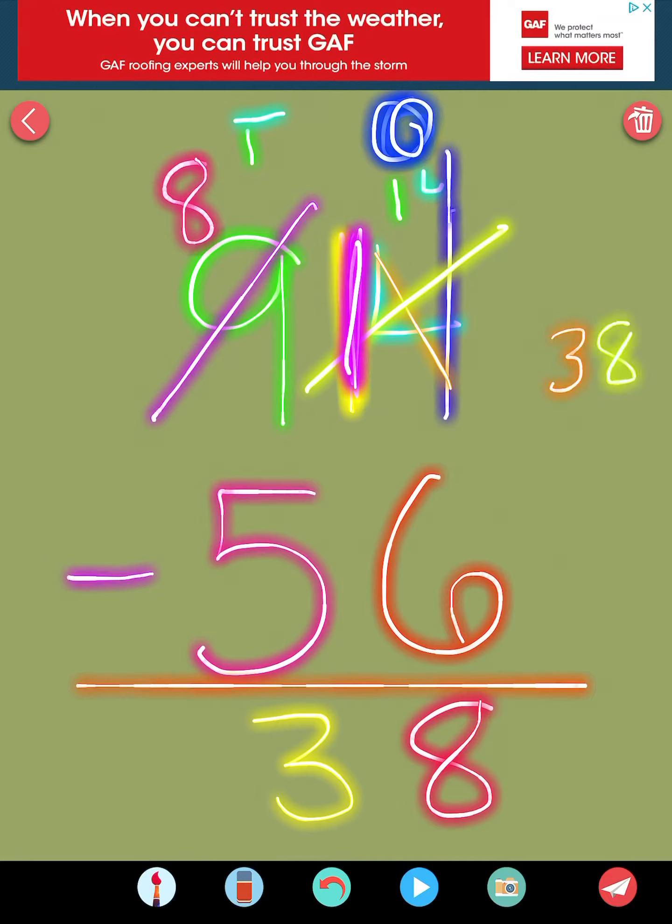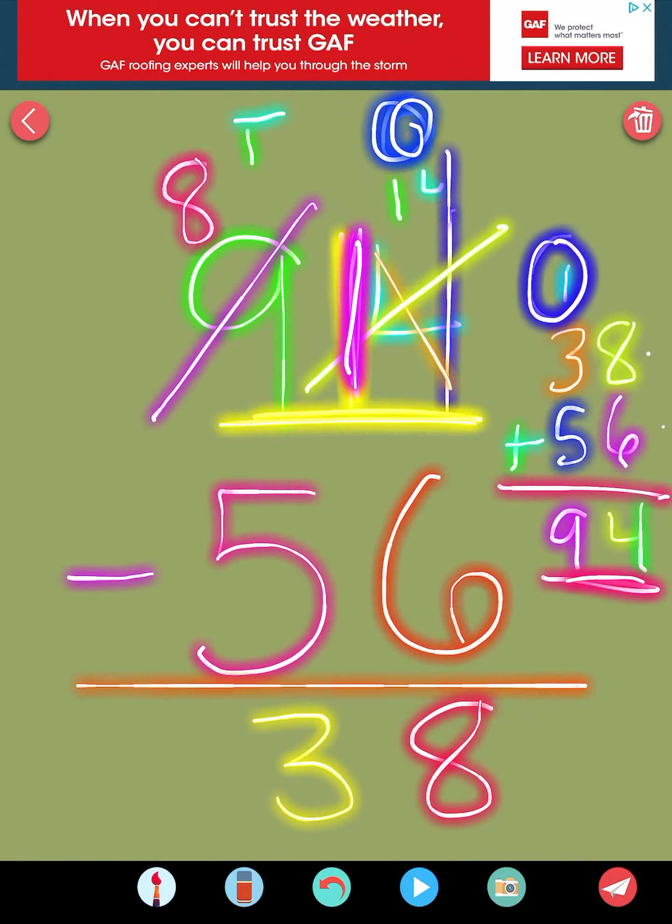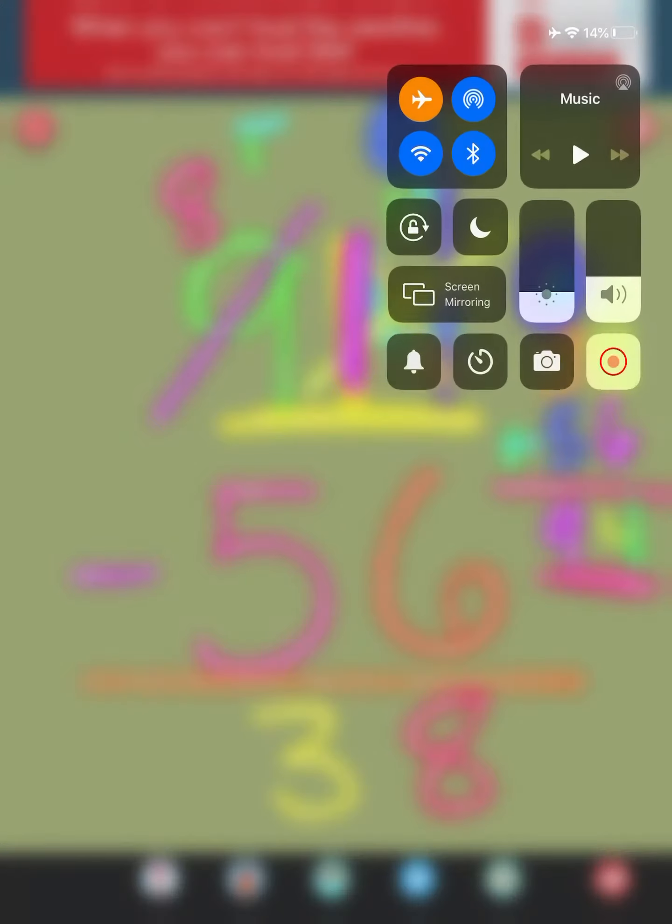So I'm going to check it really quick. I'm going to do 38 plus 56. Let's see if that gets me 94. 8 plus 6 is 14. Carry my 10. I like to circle it so I don't forget to add it. And then 1 plus 3 is 4. And 4 plus 5 is 9. So 94. 94. It checks out. Thanks for participating with me.